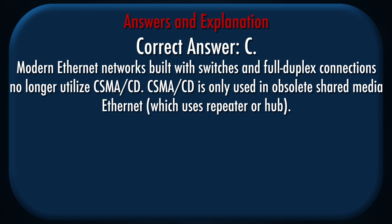Correct answer: c. Explanation: Modern Ethernet networks built with switches and full duplex connections no longer utilize CSMA/CD. CSMA/CD is only used in obsolete shared media Ethernet, which uses a repeater or hub.